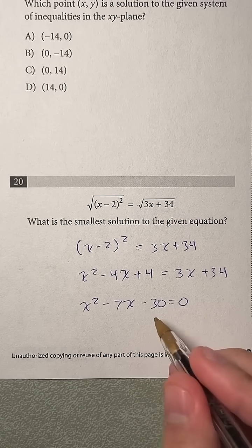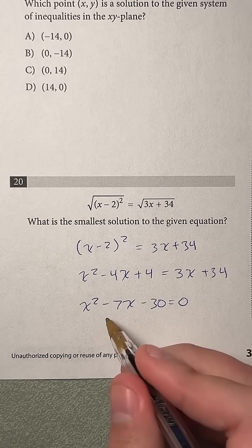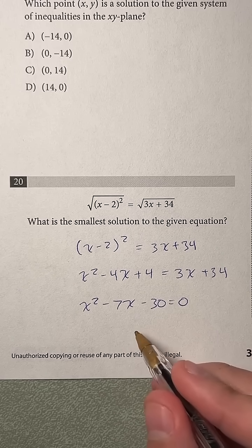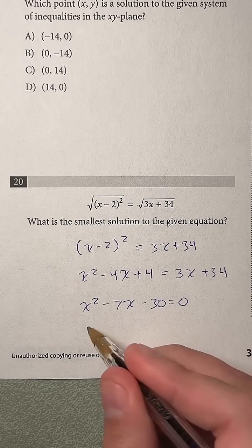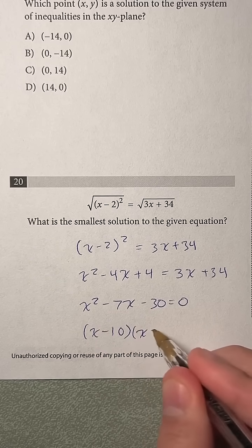And so now to factor this, we're looking for two numbers that multiply to negative 30 and add to negative 7. So those two numbers are going to be negative 10 and positive 3. So that will give us factors of x minus 10 and x plus 3.